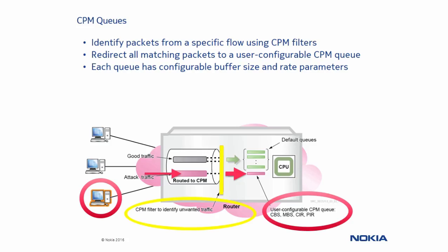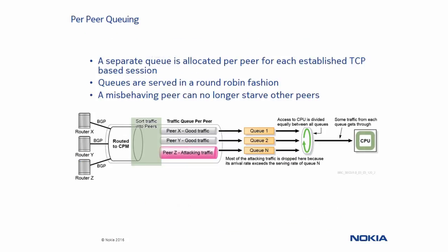Let's talk about per-peer queuing, which allocates a separate hardware queue on a per-peer basis for each established TCP-based session. Per-peer queuing supports TCP-based protocols: BGP, MSDP, Targeted LDP, and LDP. CPM queues 2001 to 8000 are reserved for per-peer queuing. These queues are allocated for established TCP-based sessions and are served in a round-robin fashion. The per-peer queuing mechanism provides fair access to CPM resources across all peers and ensures that a misbehaving peer does not starve out other peers.